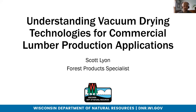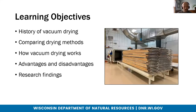Today's learning objectives: we're going to talk about the history of vacuum drying and then compare drying methods between conventional and vacuum drying. You'll learn a little bit about how vacuum drying works, some of the advantages and disadvantages, and some of the research findings we have done here in Wisconsin with a vacuum kiln at a tech college in northern Wisconsin where we typically run our live kiln course every August. That's the picture of our vacuum kiln — it's a press dry system with plates filled with hot water, drying the lumber through heating and applying a vacuum.